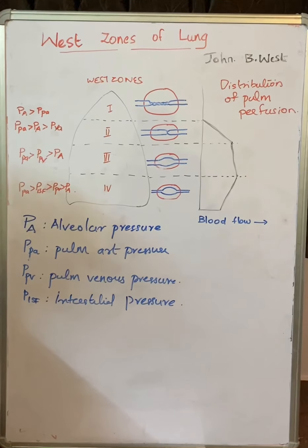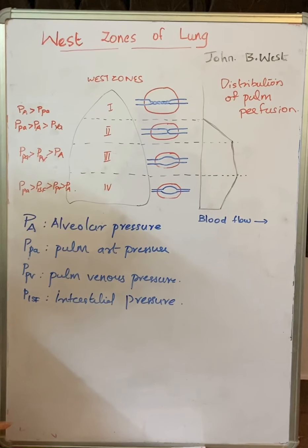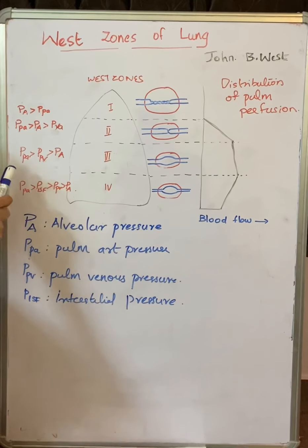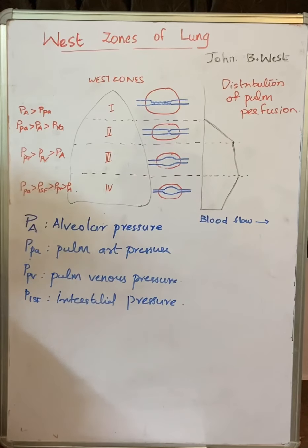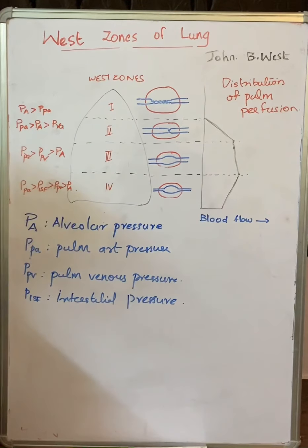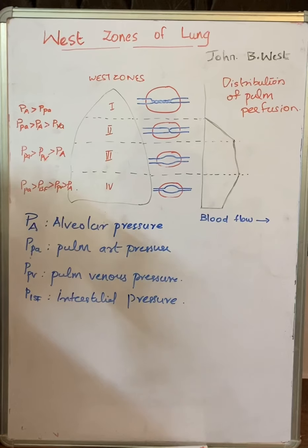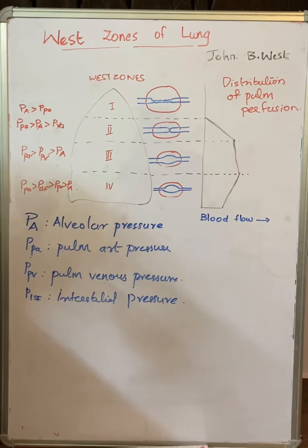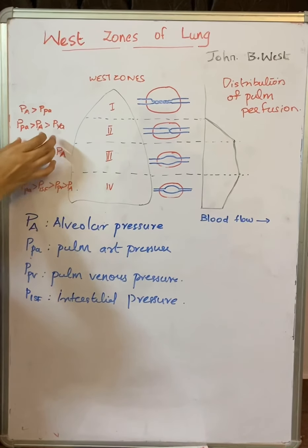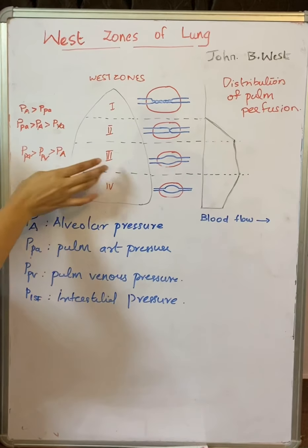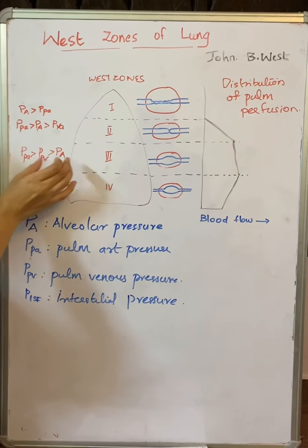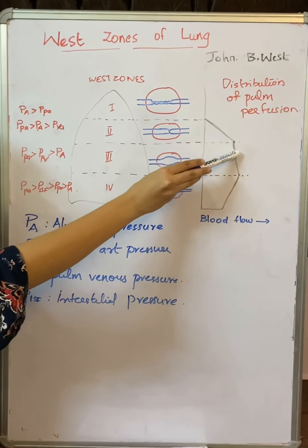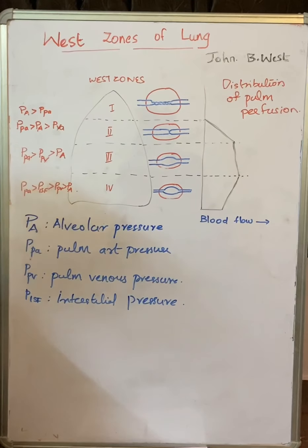As we come further down, in Zone 3, pulmonary arterial pressure is the highest, greater than pulmonary venous pressure, and alveolar pressure is the lowest (PPA > PPV > PA). The vessels get progressively distended because there is no external positive pressure compressing them. Vascular resistance decreases and perfusion increases. The PPA–PPV difference is almost constant throughout Zone 3, resulting in a uniform blood flow — unlike Zone 2, where flow gradually increases downward.